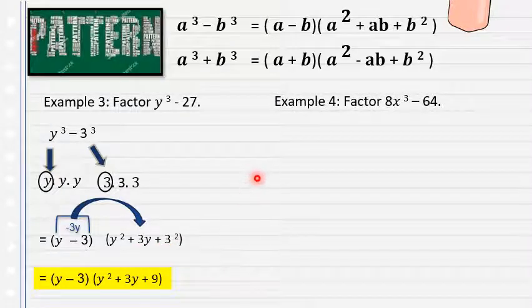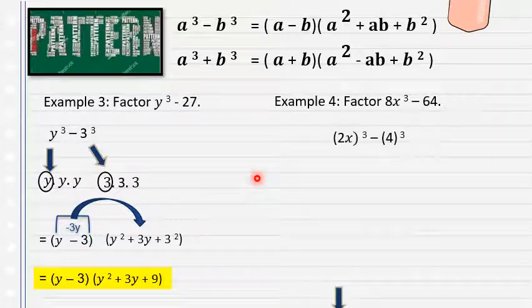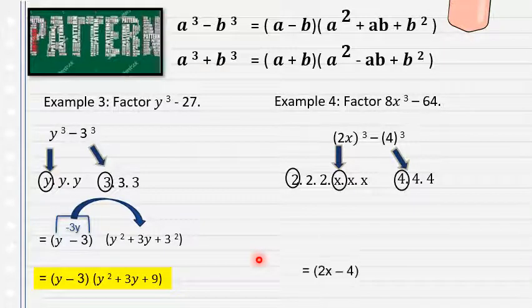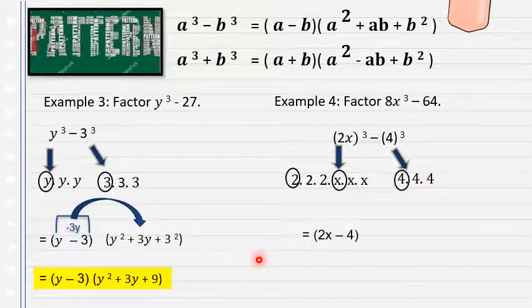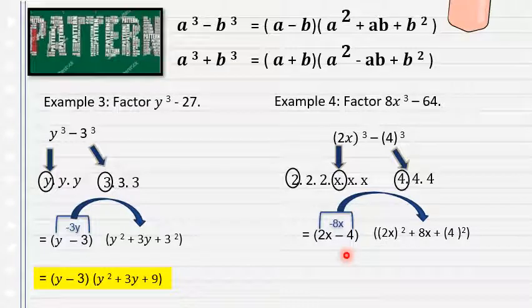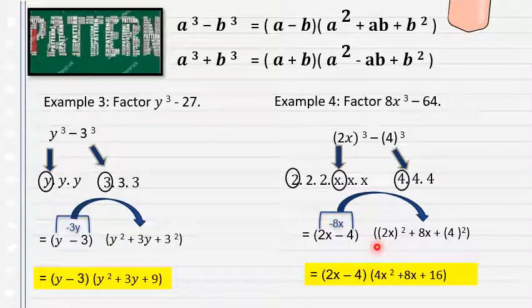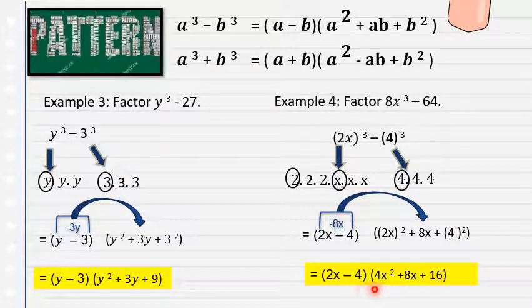Example 3: y cubed minus 27. Write as y cubed minus 3 cubed. The single values are y and 3, giving (y minus 3). Middle term: 3y. The factored form is (y minus 3)(y squared plus 3y plus 9). Example 4: 8x cubed minus 64. Write as (2x) cubed minus 4 cubed. The single values give (2x minus 4). The answer is (2x minus 4)(4x squared plus 8x plus 16). Example 5: 27m to the 4th minus 8mn to the 6th. First extract GCF = m. Inside: 27m cubed minus 8n to the 6th = (3m) cubed minus (2n squared) cubed. Factored form: m times (3m minus 2n squared)(9m squared plus 6mn squared plus 4n to the 4th).